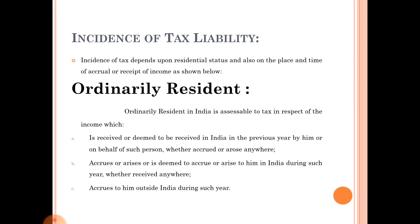The third situation: income accrues to him outside India during the previous year. For these incomes, an ordinary resident must pay tax in the current assessment year. To summarize — first: received or deemed to be received in India, accrued in India or outside India; second: accrues or arises in India, received anywhere; third: accrues outside India during the year. These are the three situations where an ordinary resident must pay tax.